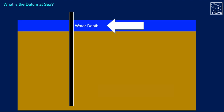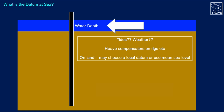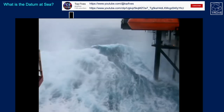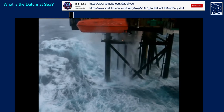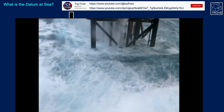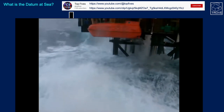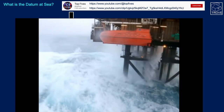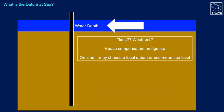When talking about water depth, we have to take into account that the sea isn't still — we have tides coming in and out. So when we talk about the datum, we're referring to mean sea level. With weather, we can get very dramatic storms, and we have to have compensators on rigs as they move up and down, while the drill string must essentially stay in a constant position with constant weight on bottom, particularly when drilling.